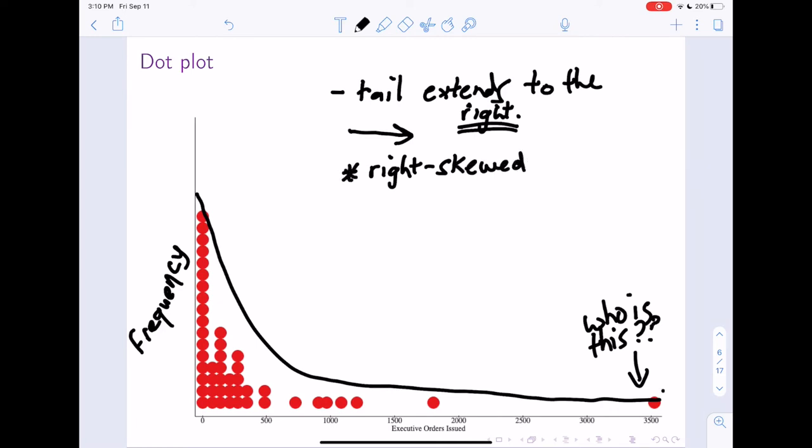And this value over here of 3,500, and very likely this value right here of maybe 1,800. These two values we would consider outliers.